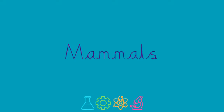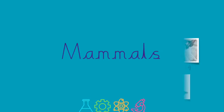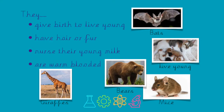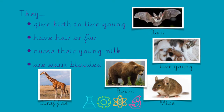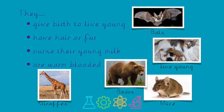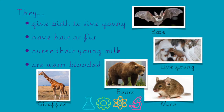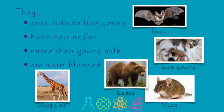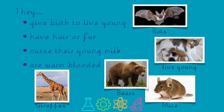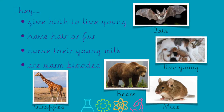Mammals give birth to live young. They have hair or fur. Mammals feed their young with milk and they are warm-blooded. Some examples of mammals are bats,